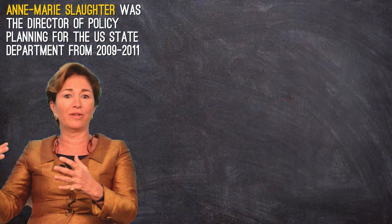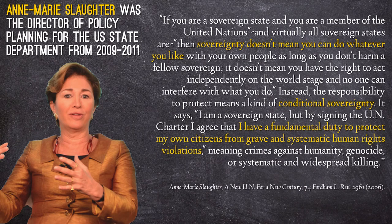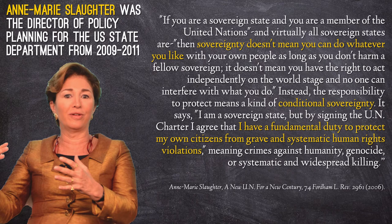In short, former director of policy planning in the Barack Obama administration, Anne-Marie Slaughter, sees the definition of sovereignty under R2P as a shift: if you are a sovereign state and a member of the United Nations — and virtually all sovereign states are — then sovereignty doesn't mean you can do whatever you like with your own people. Instead, the responsibility to protect means a kind of conditional sovereignty. It says: "I am a sovereign state, but by signing the UN Charter, I agree that I have a fundamental duty to protect my own citizens from grave and systematic human rights violations" — meaning crimes against humanity, genocide, or systematic and widespread killing.